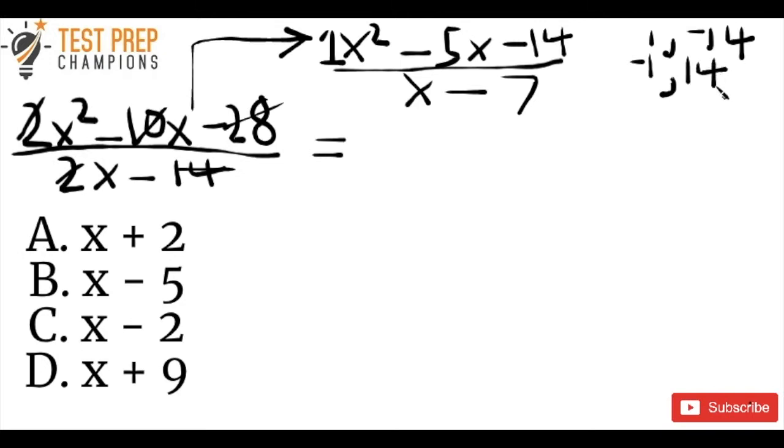So negative 1 and 14. But if we multiply 1 times negative 14, we will get negative 14. But if you add these together, you're not going to get negative 5. So neither of these pairs is going to help us out here.